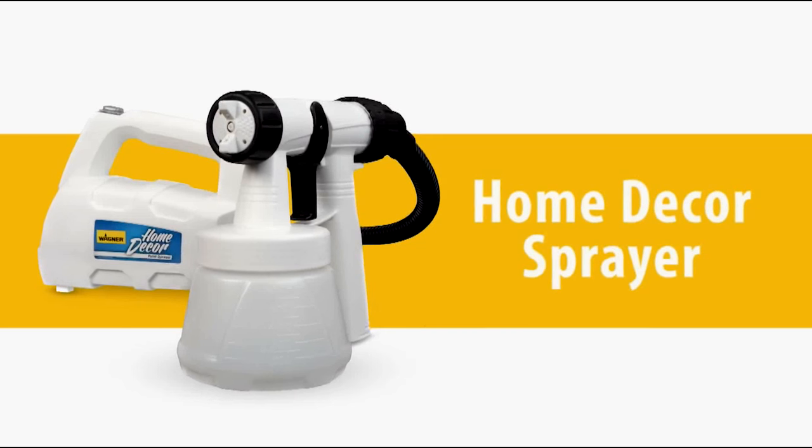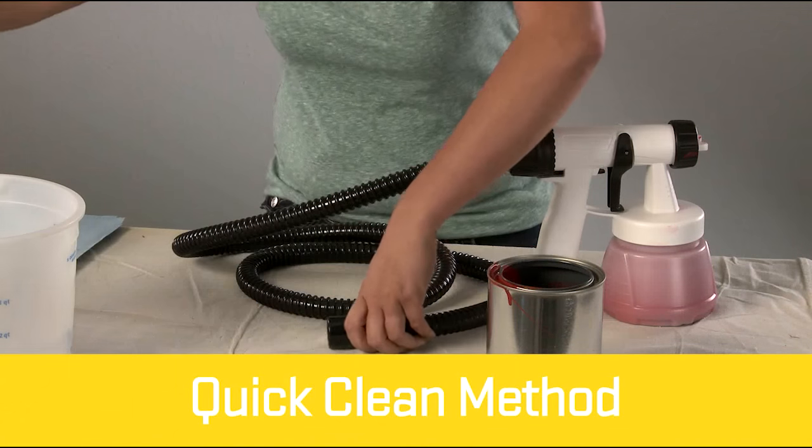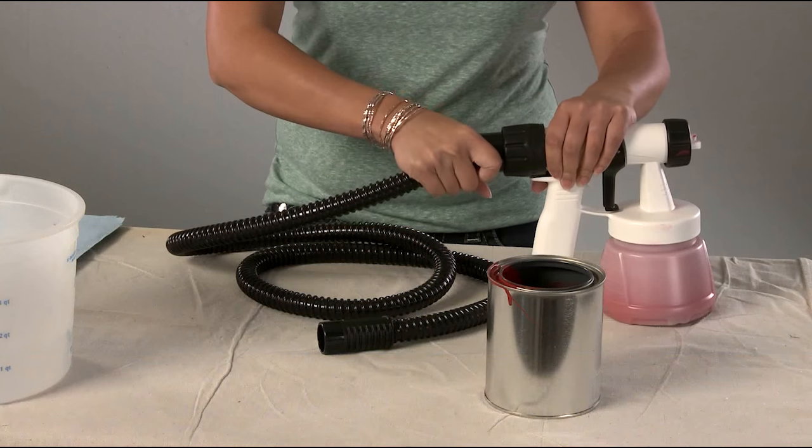There are two ways to clean your home decor sprayer. The quick-clean method is best for fast cleaning during color changes. First, turn off the motor, disconnect the hose, and unscrew the cup.